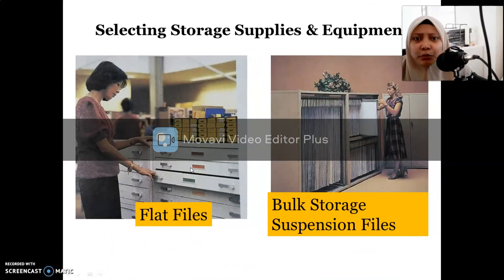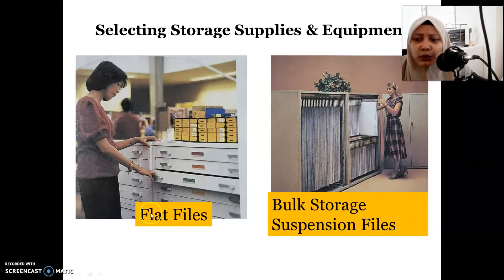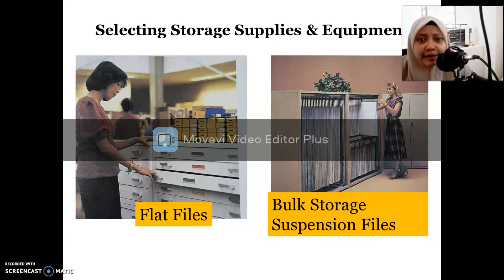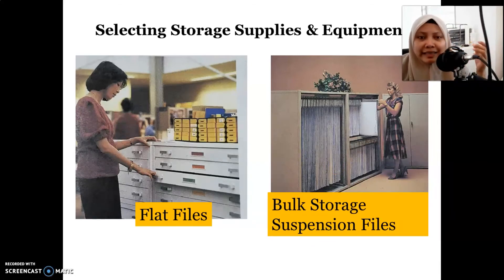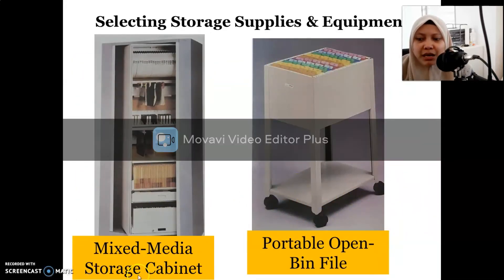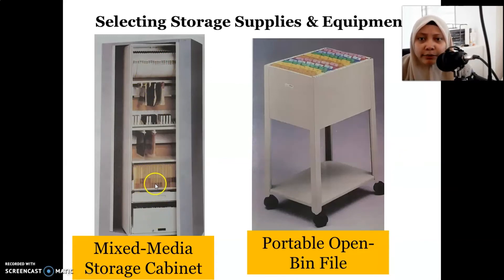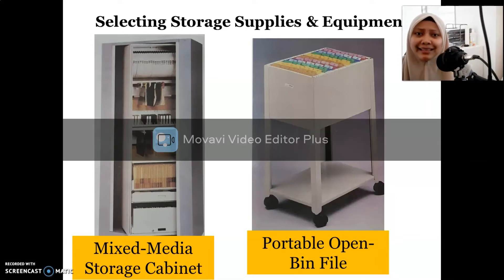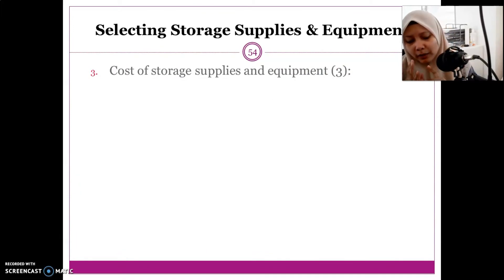This is the more traditional flat file equipment, used for storing a very small and thin volume of records. The bulk storage suspension file is more suitable for odd-sized or large records, such as maps. The mixed media storage cabinet is a combination — it can store binders, tip files, and folder files together. A portable open bin file is movable like a drawer but open with no cover.